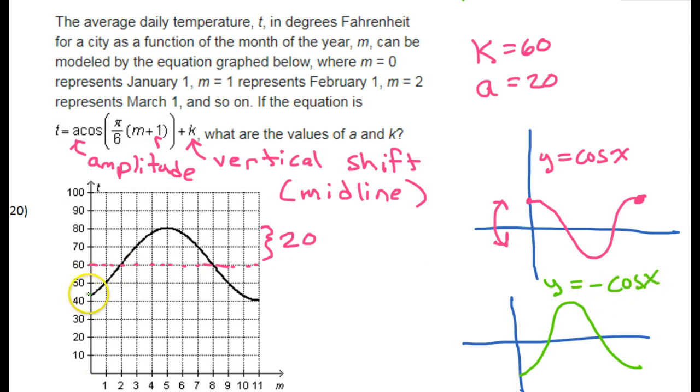So this would be the graph Y equals negative cosine X. So do you see how this graph looks a little bit more like that? All right, it starts low and then goes high. So that tells us that we're looking at a reflection over the X-axis.